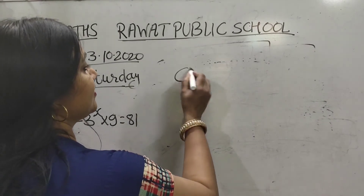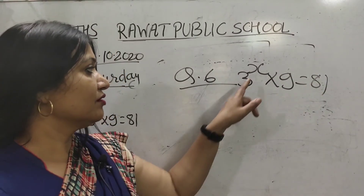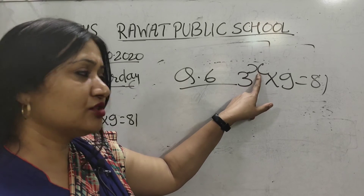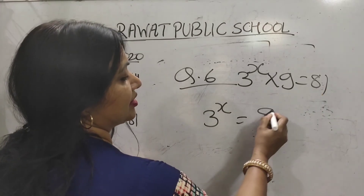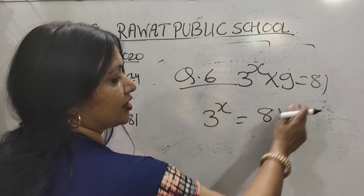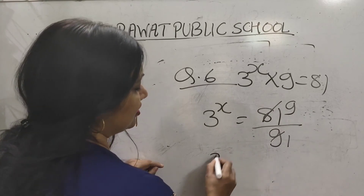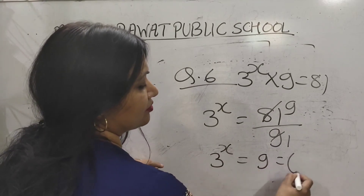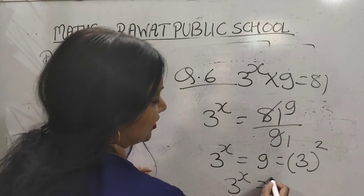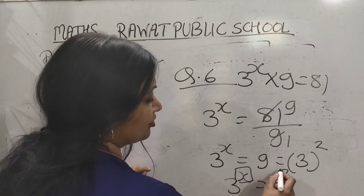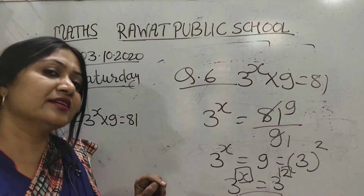We need to find out the value of x. Question: 3^x × 9 = 81. Solving: 3^x = 81 ÷ 9 = 9. Now 9 = 3^2, so 3^x = 3^2. Since the bases are equal, equate the powers: x = 2. Answer: x is equal to 2.